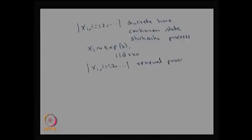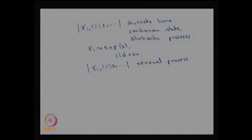We will discuss the renewal process in detail later in this course, but here I am explaining how the renewal process is created from the Poisson process. N(t) is a Poisson process for different values of t, whereas the inter-arrival times represent when renewals take place. The renewals form a stochastic process called a renewal process — specifically, one in which renewals occur at exponentially distributed, i.i.d. time intervals.